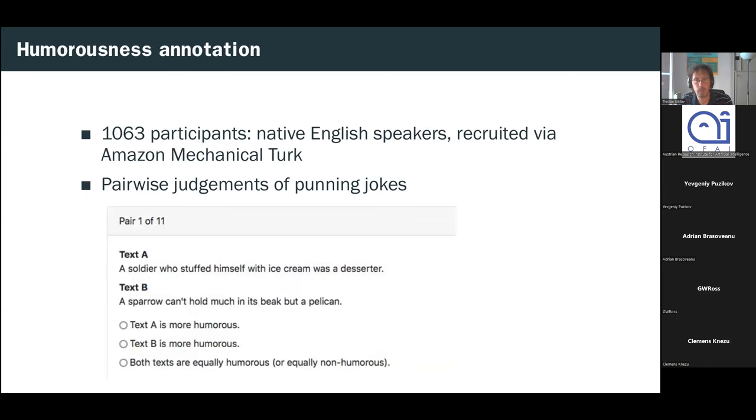And we also incorporated humorous misjudgments that I had actually gathered for a previous Seminoval study in 2021, which used that same Seminoval 2017 data set. And what we did was we got over 1,000 click workers from Amazon Mechanical Turk to give us pairwise judgments of the humorousness of the jokes. So, you can see here a screenshot of the sort of question they were asked. They were presented with basically two jokes from the data set, and they were asked which one they thought was funnier, either joke A, joke B, or both or neither.